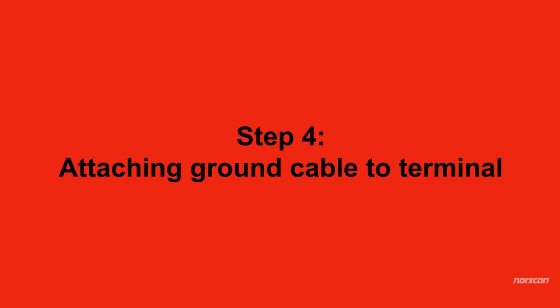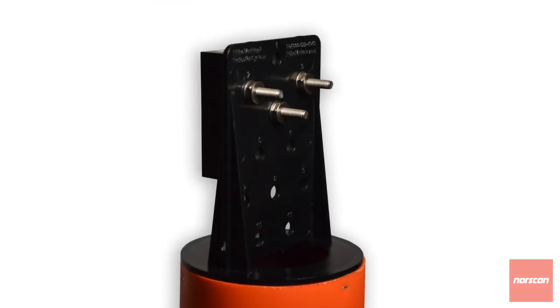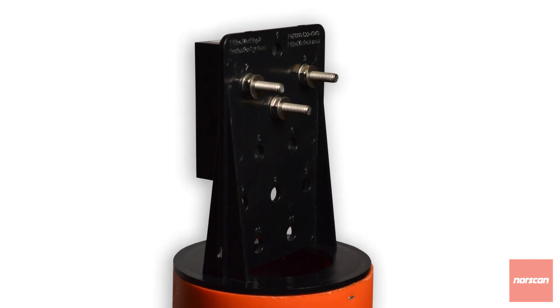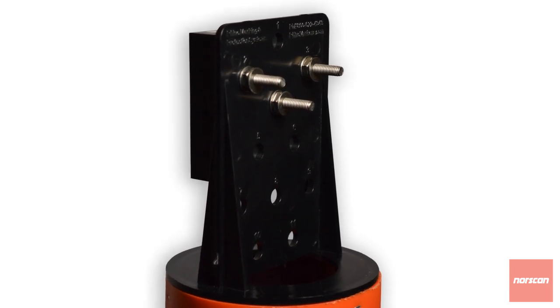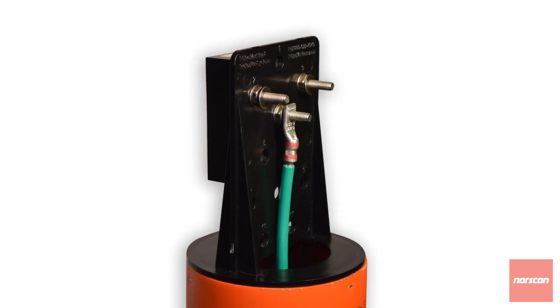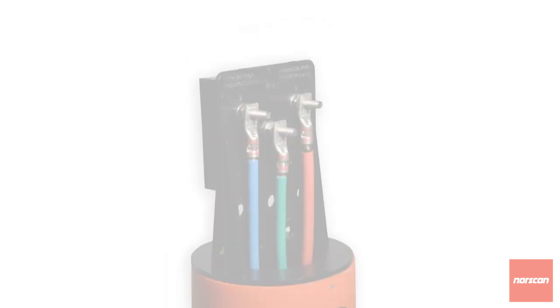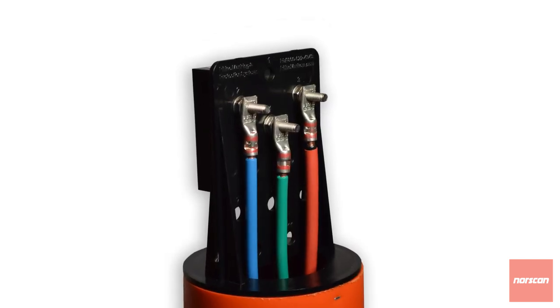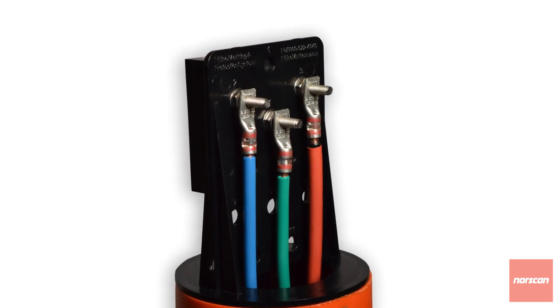Step 4: Attaching Ground Cable to Terminal. Add one washer, then one nut, and then another washer to each terminal stem post. The ground cable attaches to the number 4 center terminal post. Connect the remaining two leads as per your company color code and direction specs.